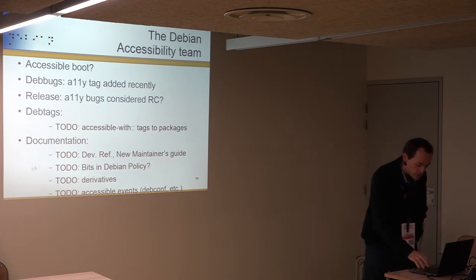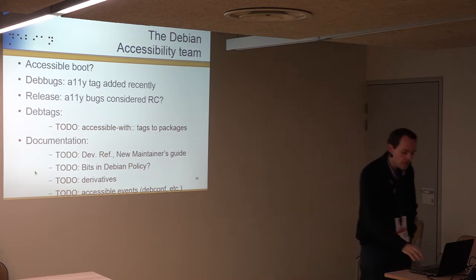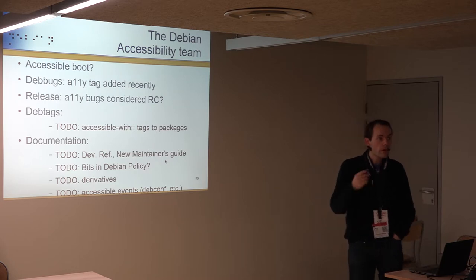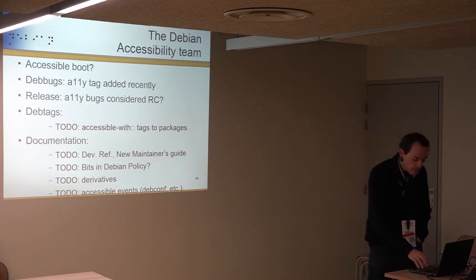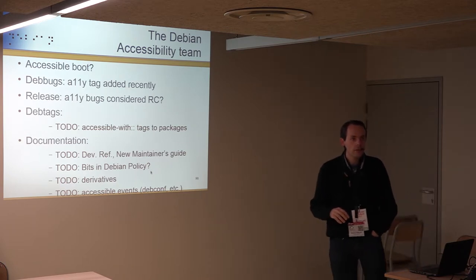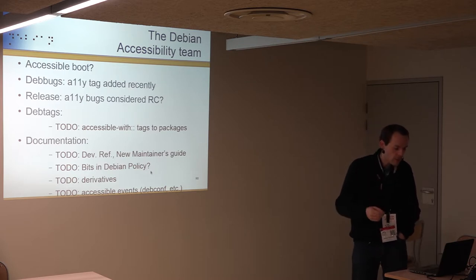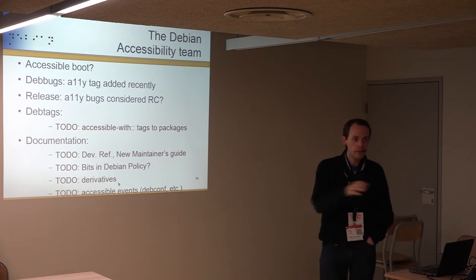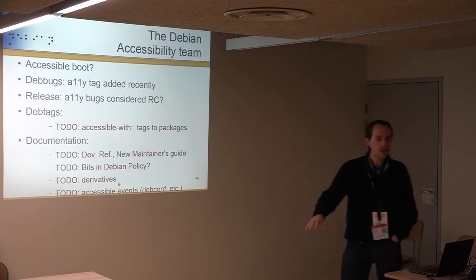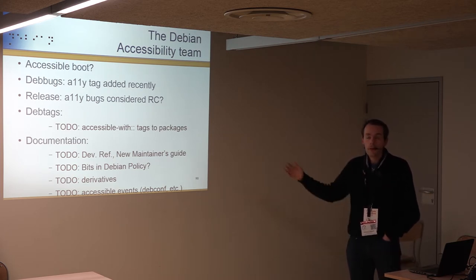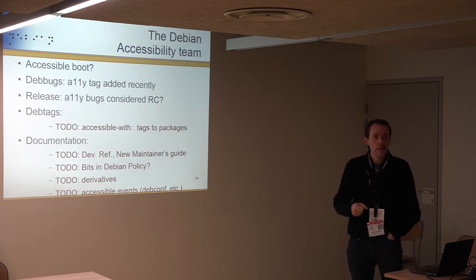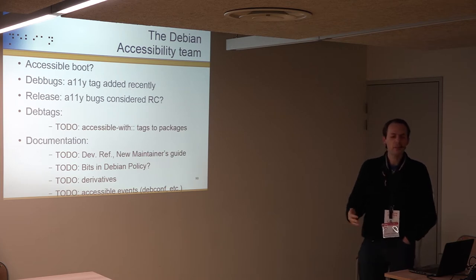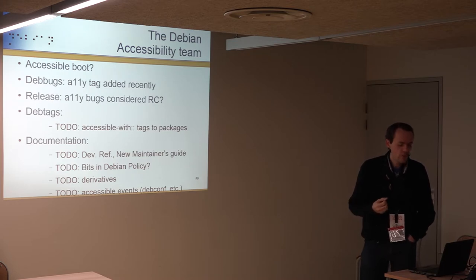There's a lot of documentation to write — for the Developer Reference and New Maintainer Guide, to explain the accessibility bus and the importance of these issues. There may also be bits to add to the Debian Policy about accessibility. We should also talk with derivatives — it's good to make the Debian installer accessible, but if derivatives accidentally break it because they don't understand how it works, our goal is lost. Ideally derivatives need to know things like 'don't disable the boot beep, it's important.'